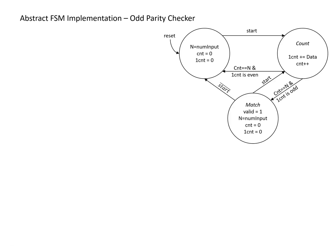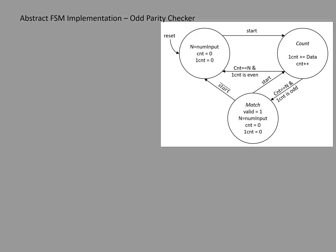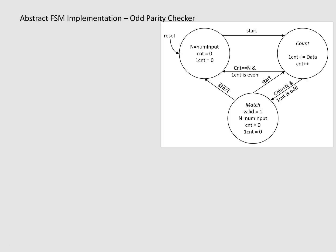In this video we're going to look at how to take an abstract finite state machine and translate it into a concrete data path and control unit. The abstract finite state machine we're looking at implements an odd parity checker. The details on how this is created are covered elsewhere. For now, we have this abstract finite state machine and we need to look at it to determine what different elements we need in the data path.